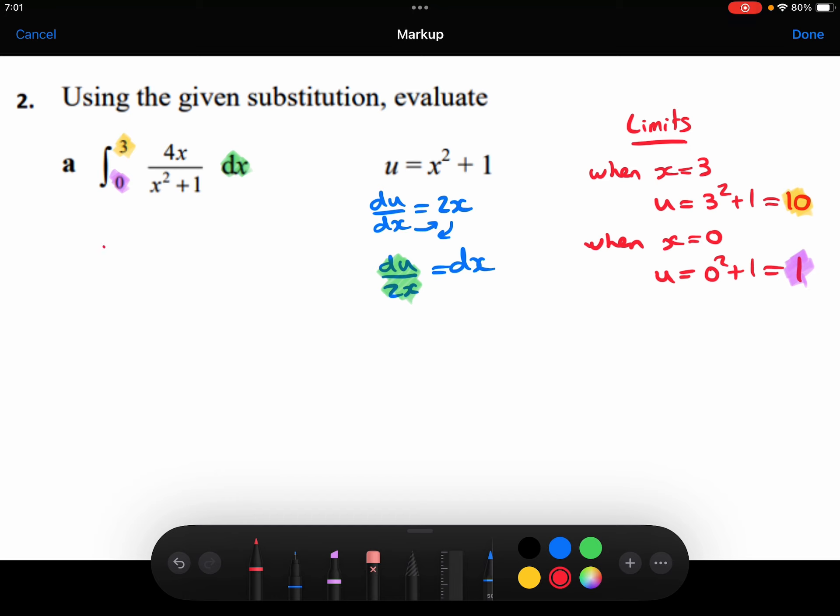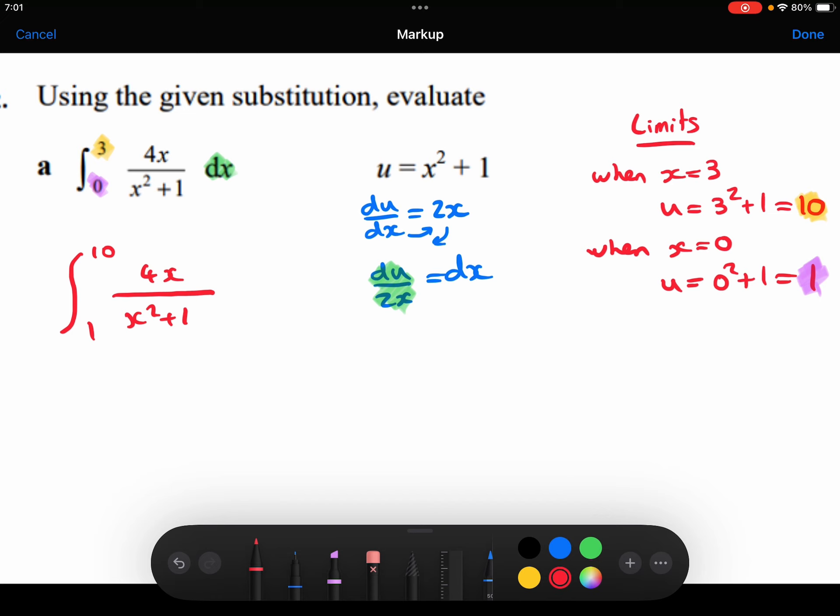Let's now change each of those parts of the integral. My upper limit is 10, my lower limit is 1. I'm going to leave the 4x and the x squared plus 1 for now, we'll change those into the u world in a moment. And I'm changing the dx to be du over 2x.